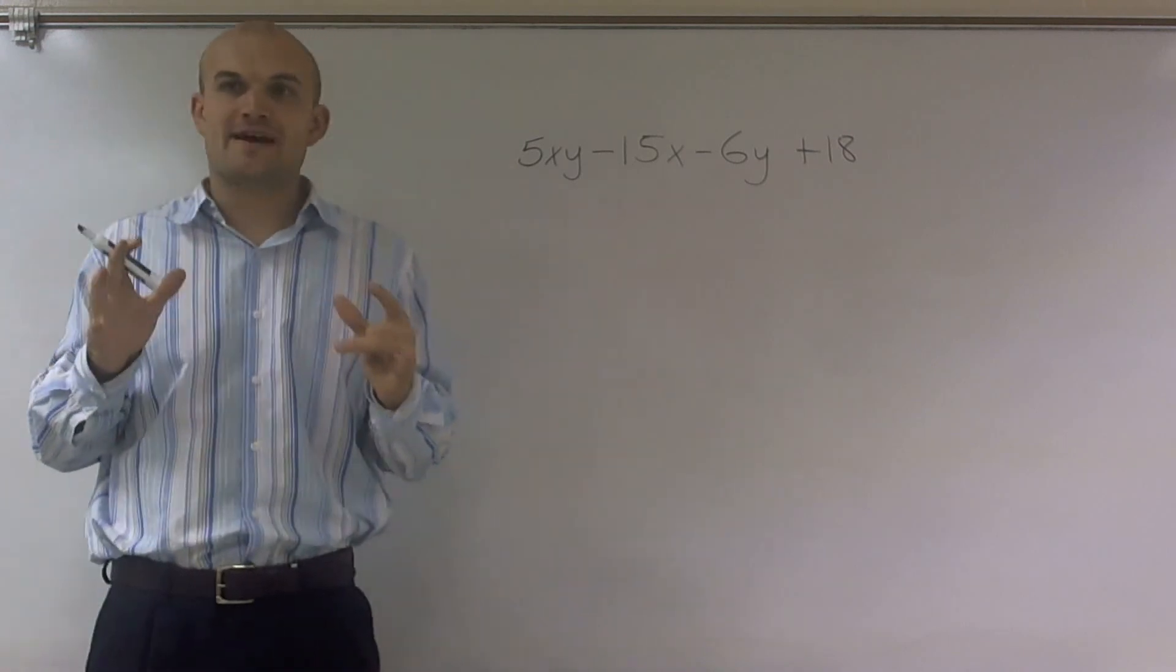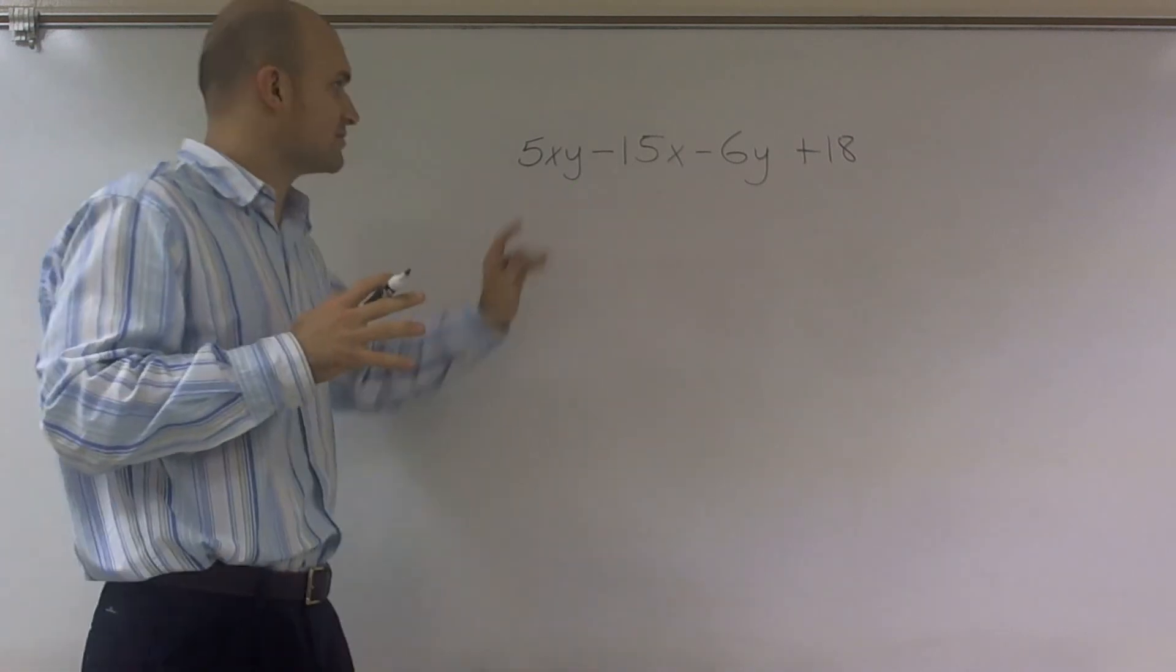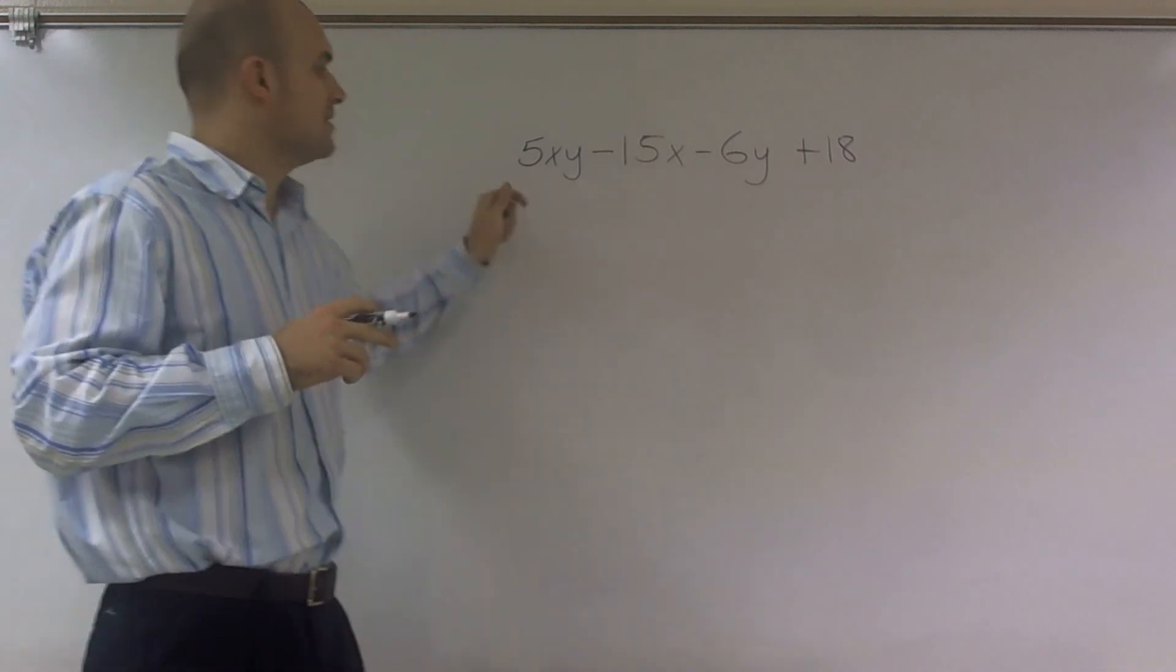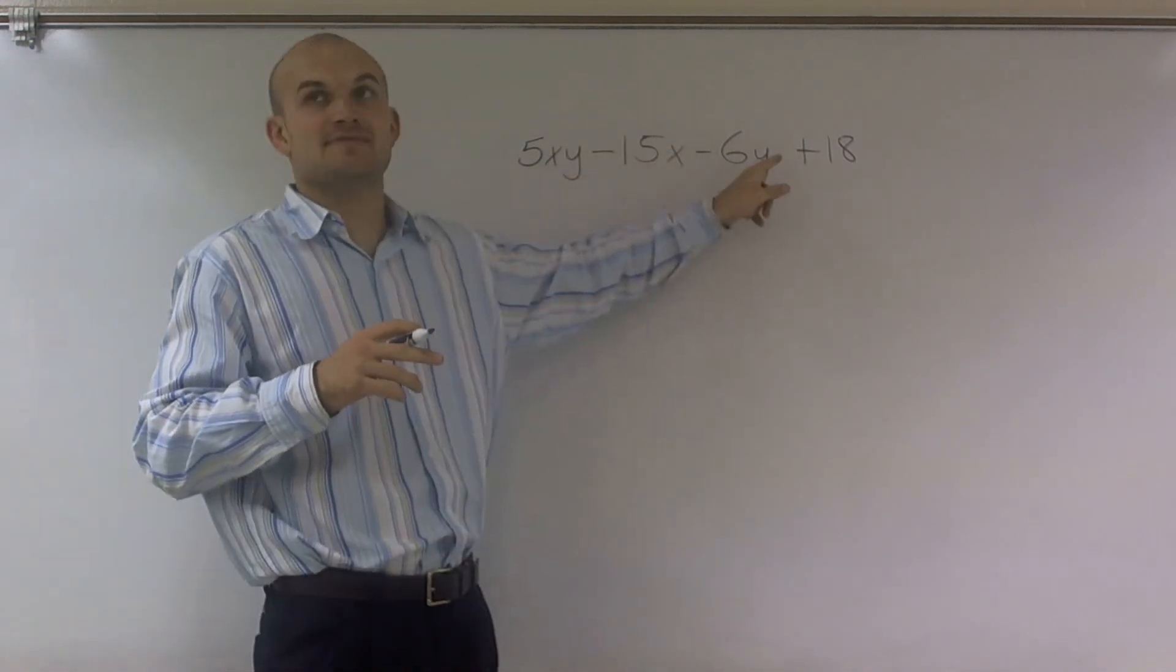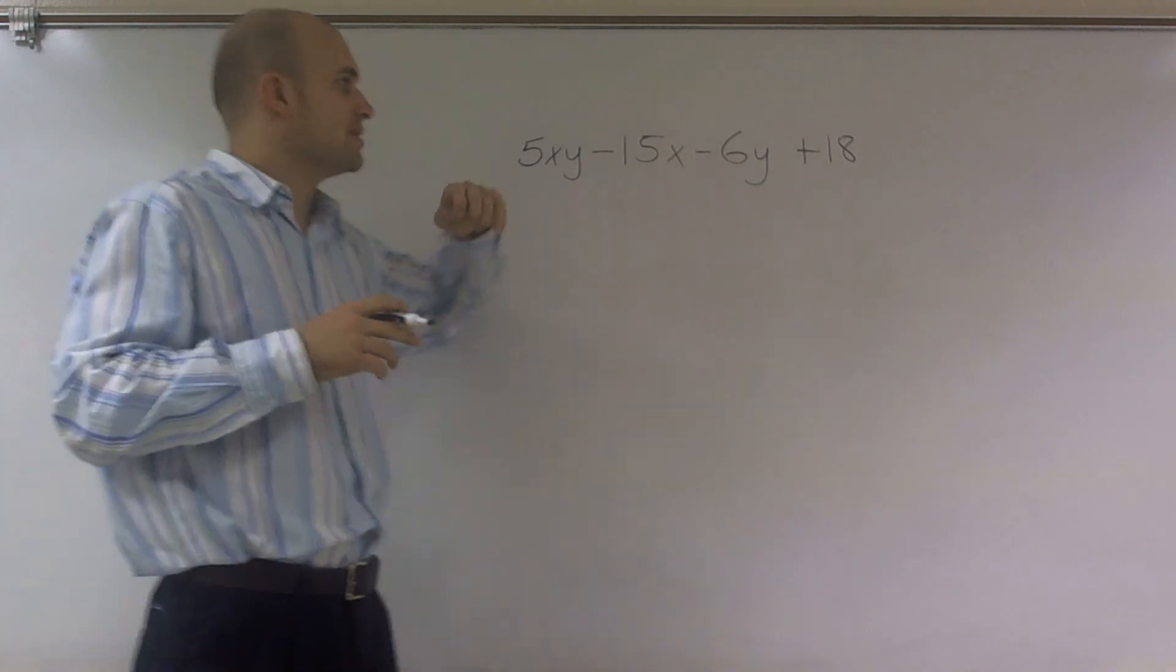And so what I'm going to do is when I factor by grouping, what we want to do is we have this right now in four terms. We have four different terms: 5xy, negative 15x, negative 6y, and a positive 18.